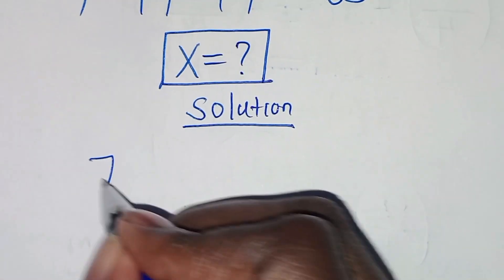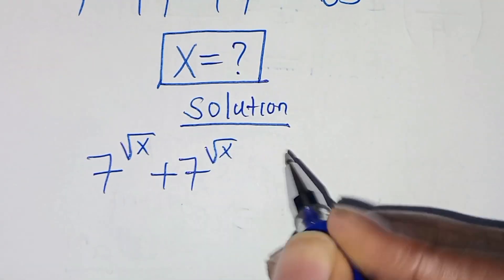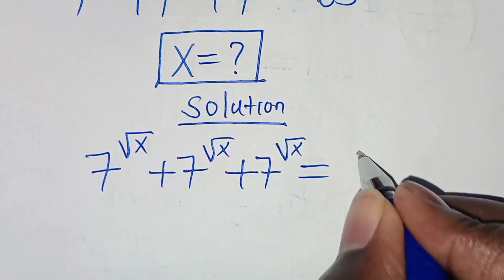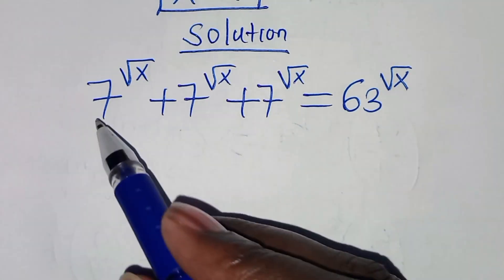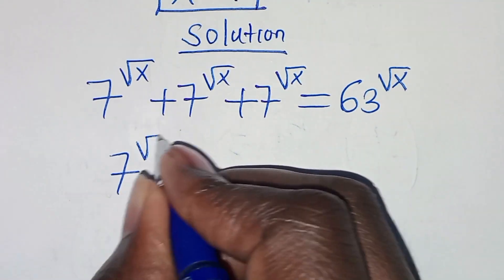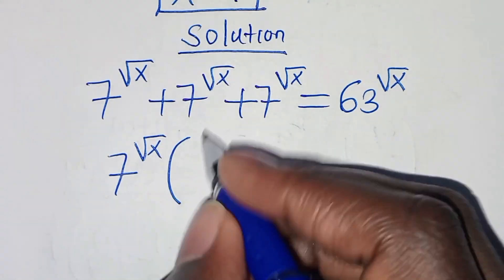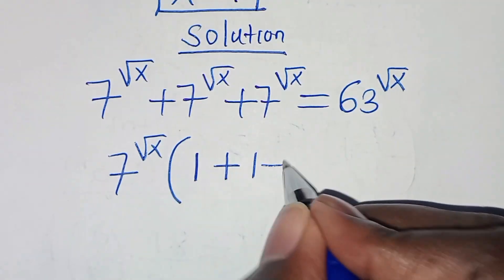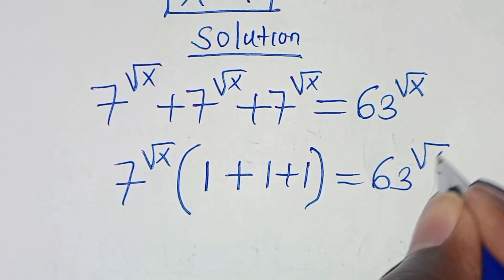We have 7 to the power of square root of x plus 7 to the power of square root of x plus 7 to the power of square root of x, and this is equal to 63 raised to the power of square root of x. Now, 7 to the power of square root of x is common here, so we can factor it out, giving us 7 to the power of square root of x times (1 plus 1 plus 1), which equals 63 raised to the power of square root of x.